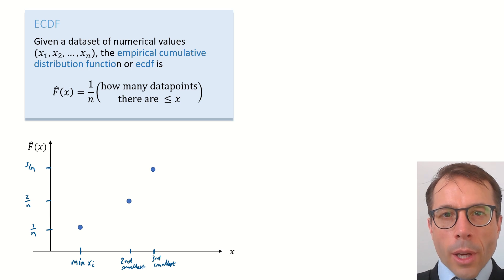Now, let's think about the value of f-hat of x in between these points. For any x smaller than the minimum value, f-hat of x equals 0, because there are no points.